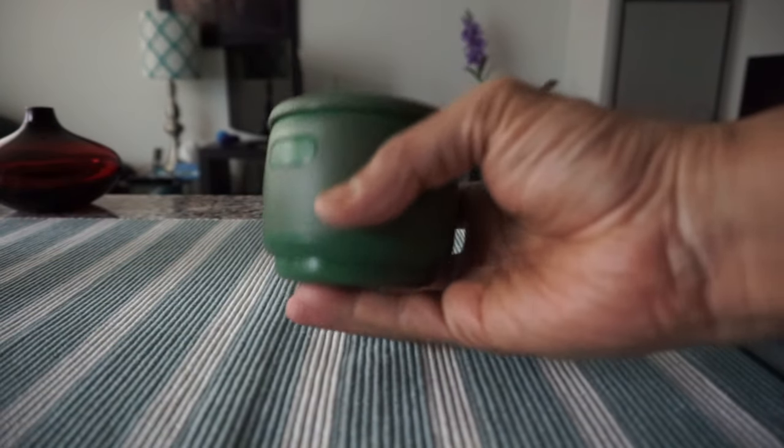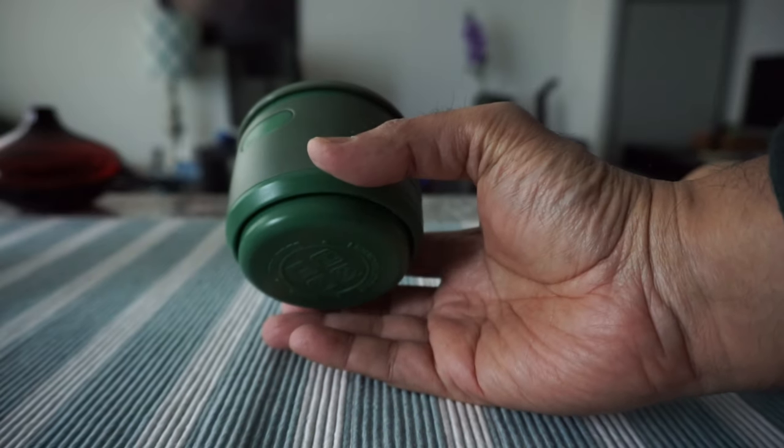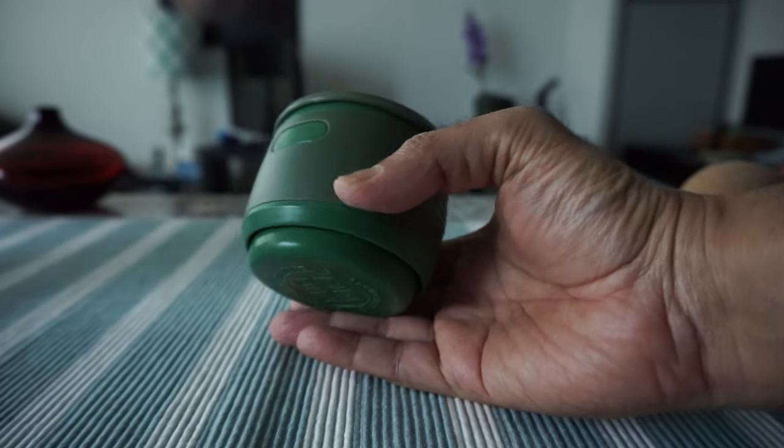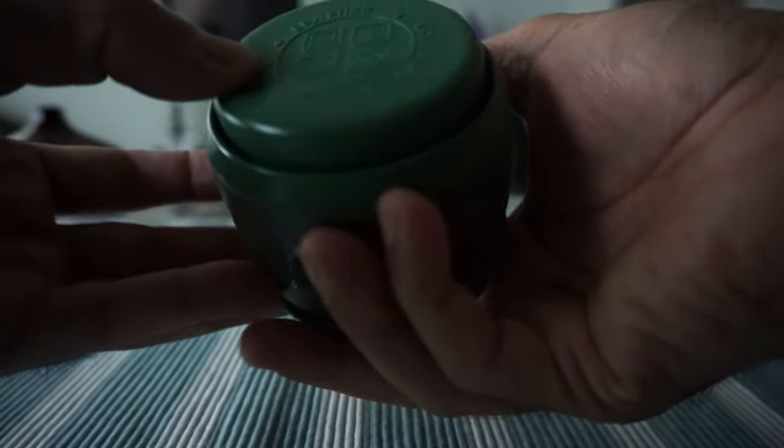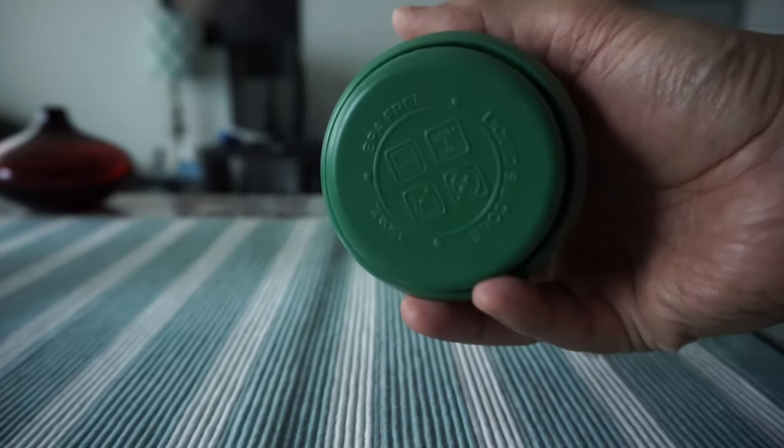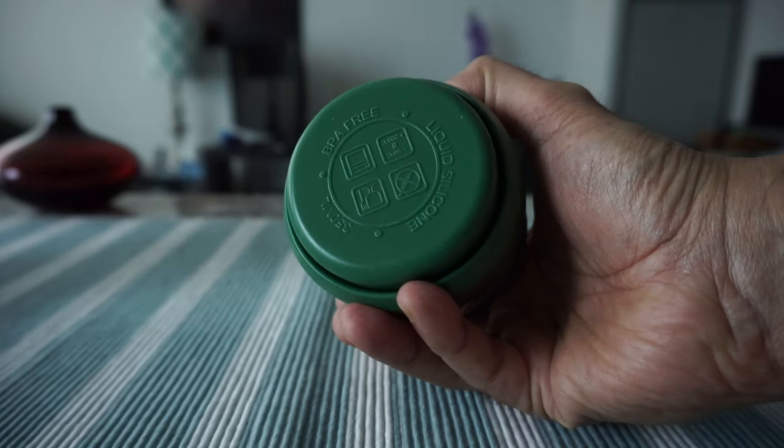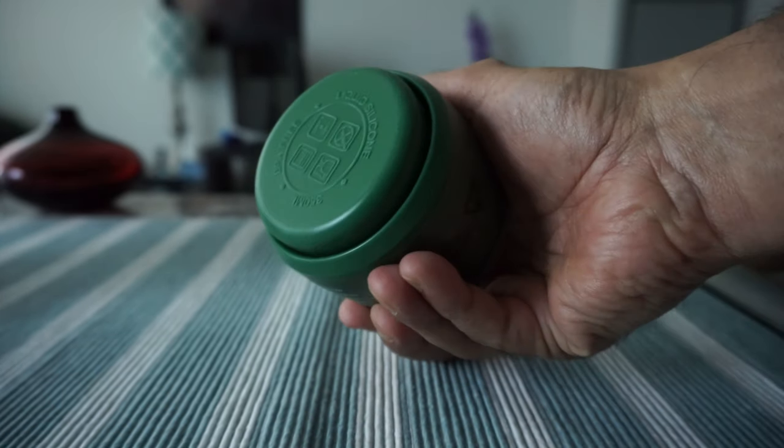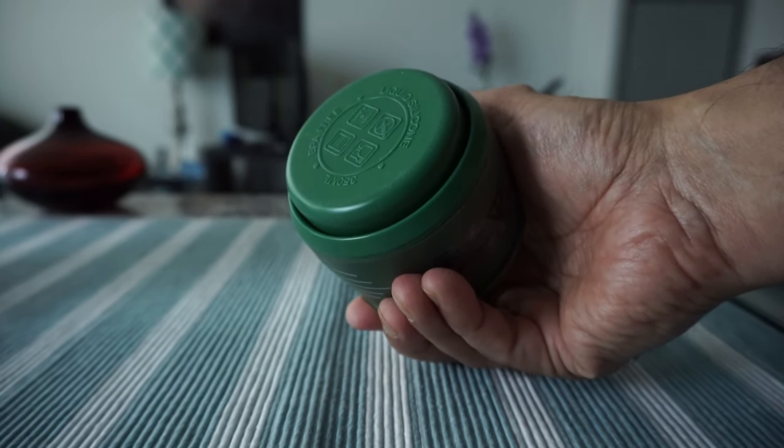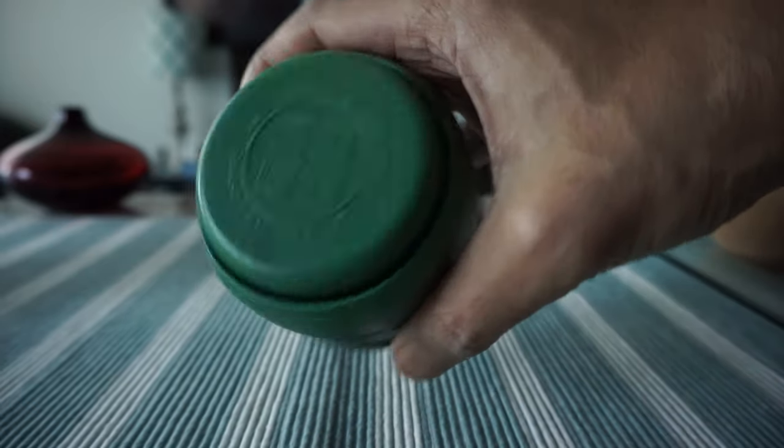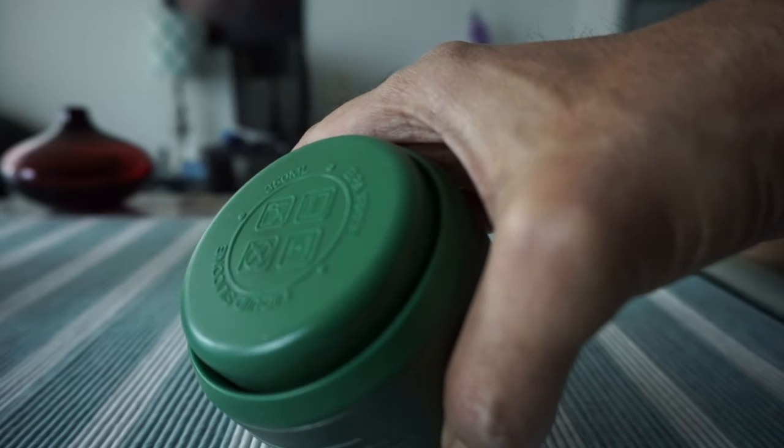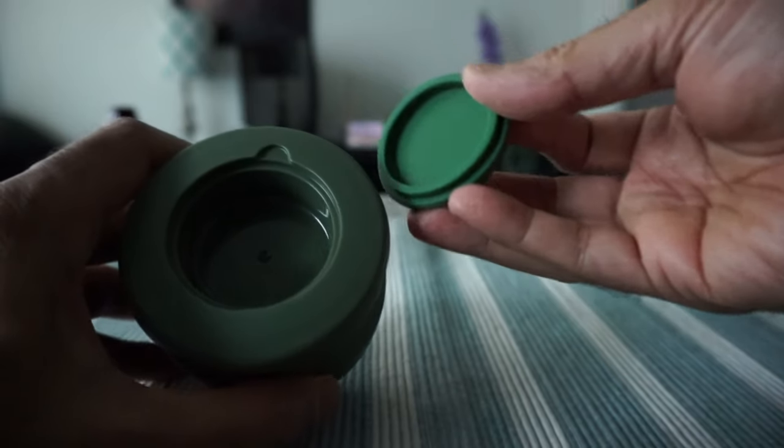Okay, so the box is empty and I'll set this aside. Here is what we have. This color is army green and I like this color. On the bottom of the cup you can see it says BPA free, and here we have liquid silicon. It has 350 ml.